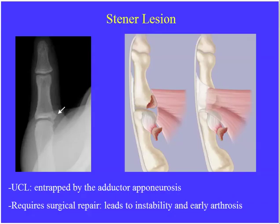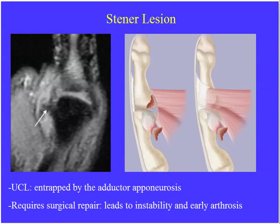The Stener lesion occurs with a tear of the ulnar collateral ligament. On plain film, you may see an avulsion at the base of the proximal phalanx. The adductor aponeurosis comes across perpendicular to the long axis of the thumb. When the ulnar collateral ligament tears with an avulsion, it can retract proximal to the adductor aponeurosis and become entrapped — that's the Stener lesion, which requires repair. On MR, the retracted and torn ulnar collateral ligament is found deep to the adductor aponeurosis rather than at its normal attachment to the base of the proximal phalanx.